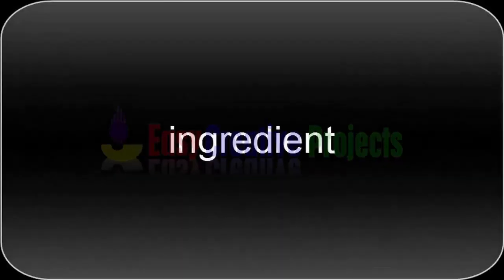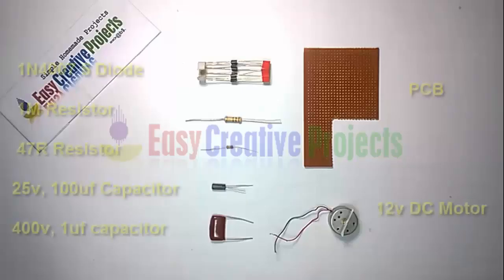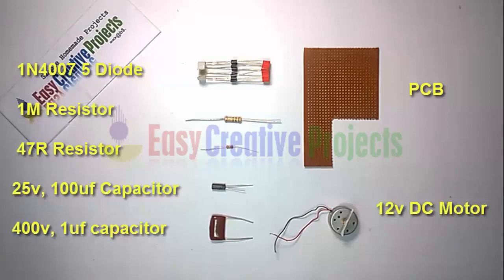For making this project we need some ingredients. Five diodes of 1N4007, 1M resistor, 47 ohm resistor.